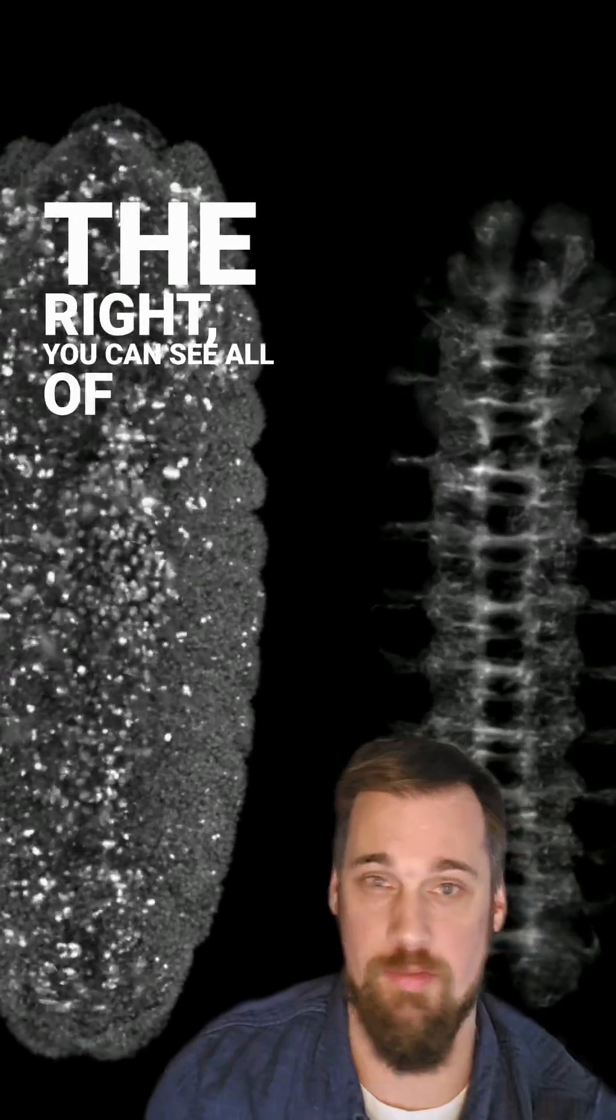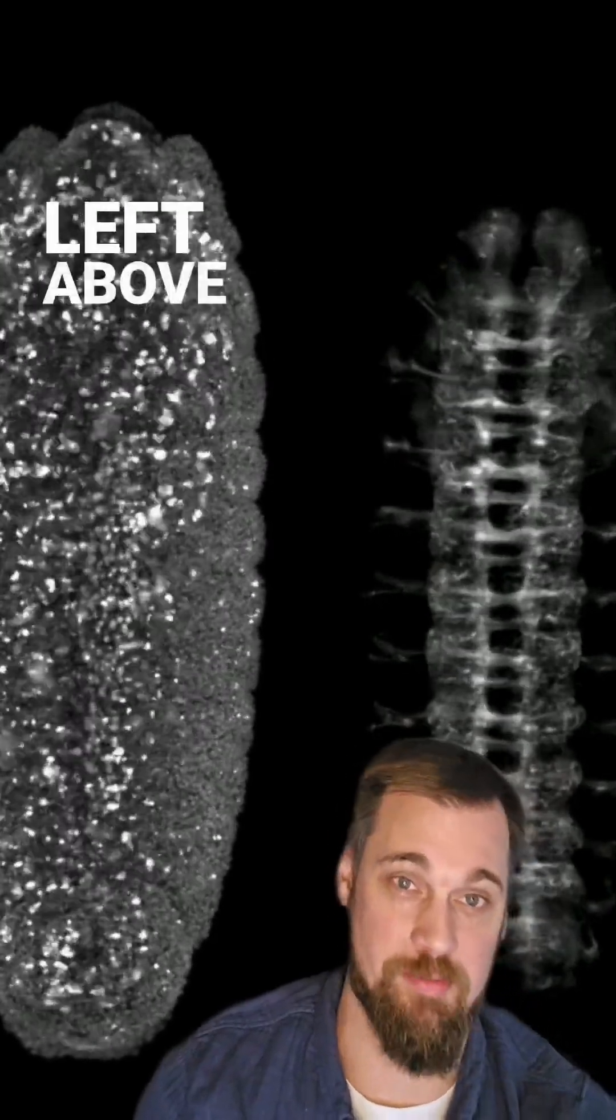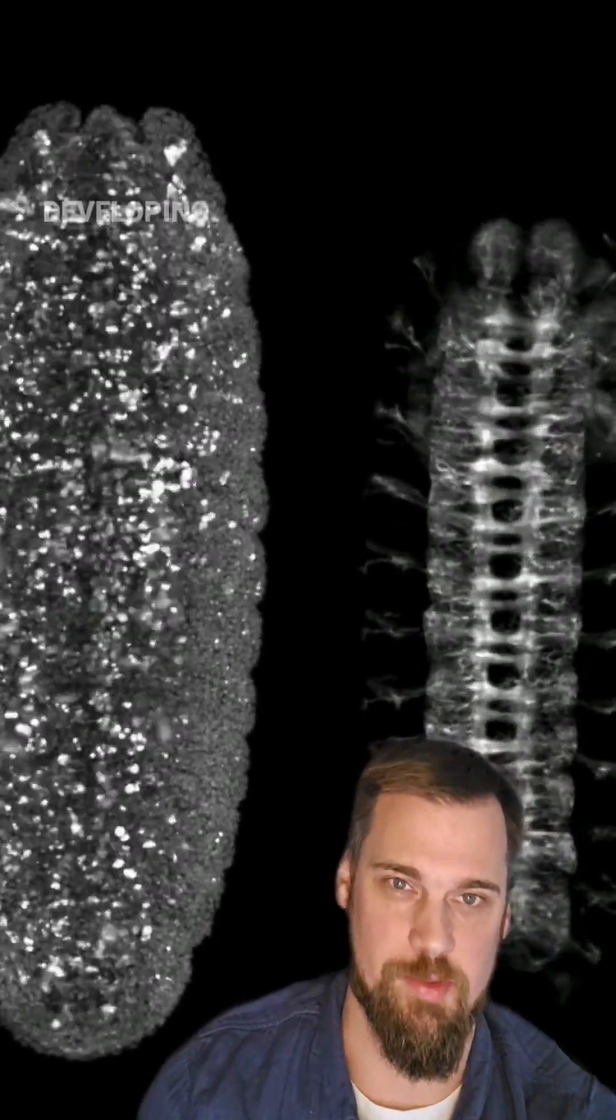So on the right, you can see all of the cells in the embryo. And on the left, above my head, you can see just the nervous system developing.